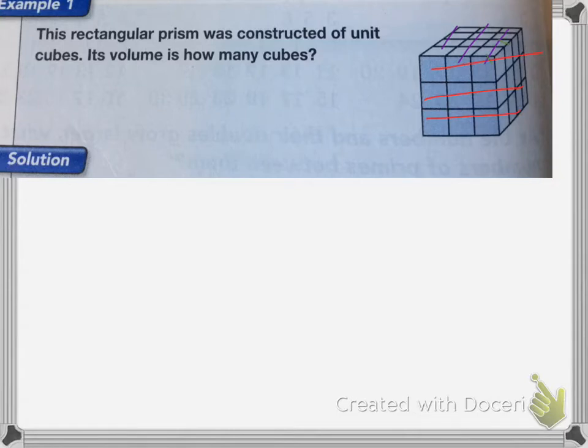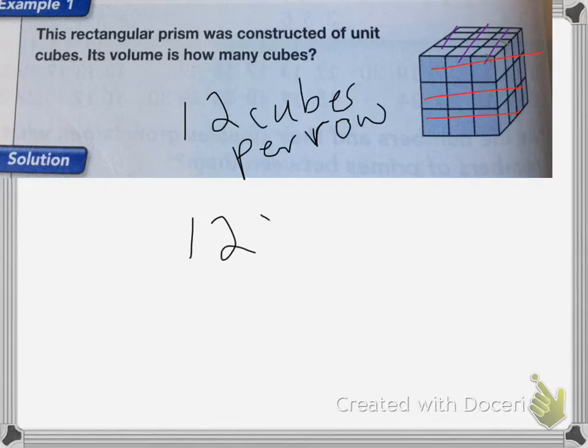So 3 times 4 is 12 cubes per row. We know that there are 12 cubes on each row. Since there are three rows, I'm going to do 12 times the three rows, which is equal to 36 cubes total.